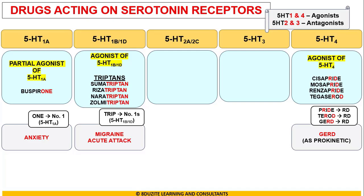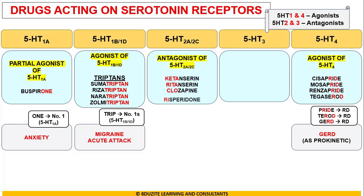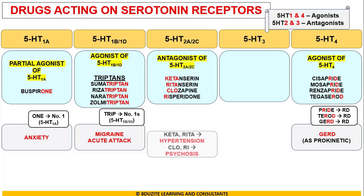Now coming to the receptors in the middle — numbers 2 and 3 — we have all antagonists. Starting with 5-HT2A/2C receptors, we have antagonists such as Ketanserin, Ritanserin, Clozapine, and Risperidone. Ketanserin and Ritanserin are used in hypertension, and Clozapine and Risperidone are used in psychosis.